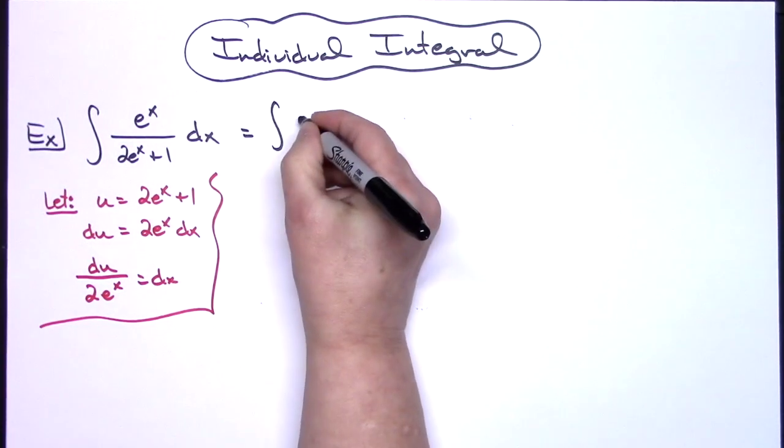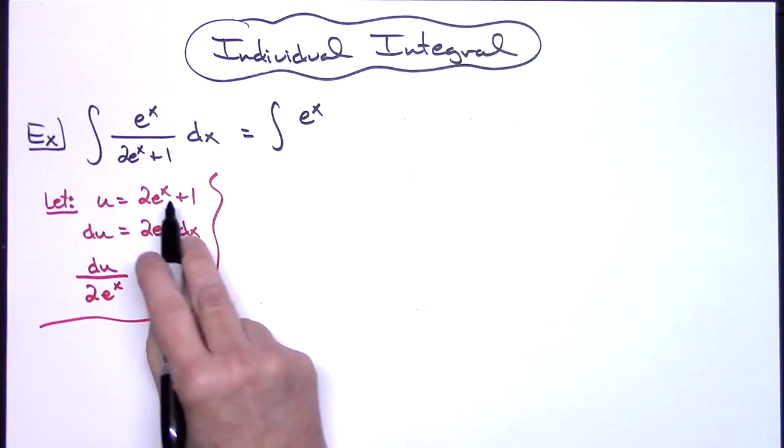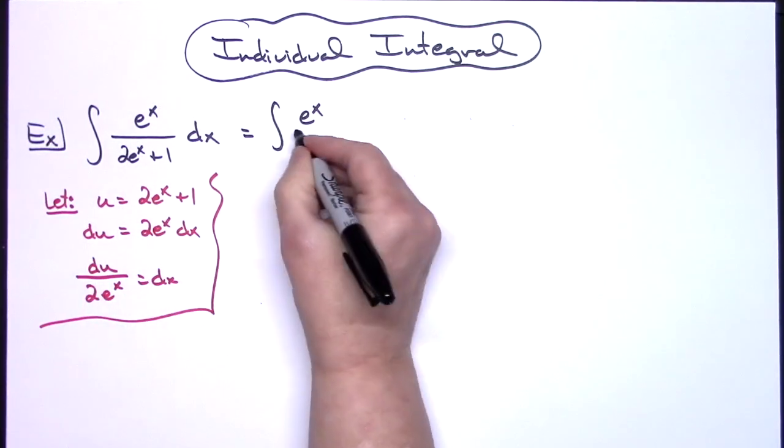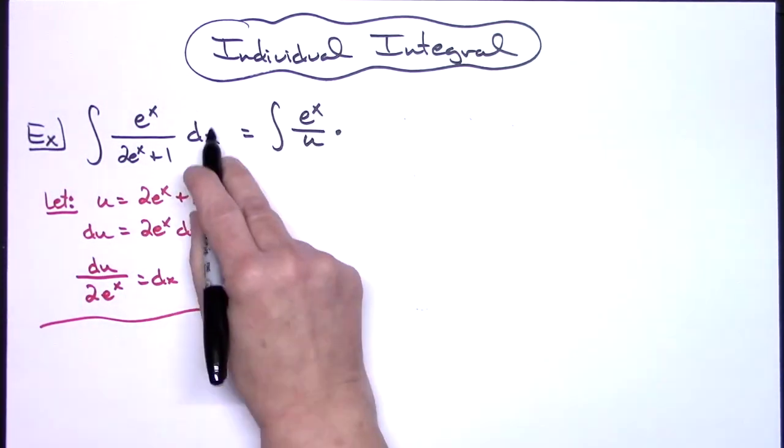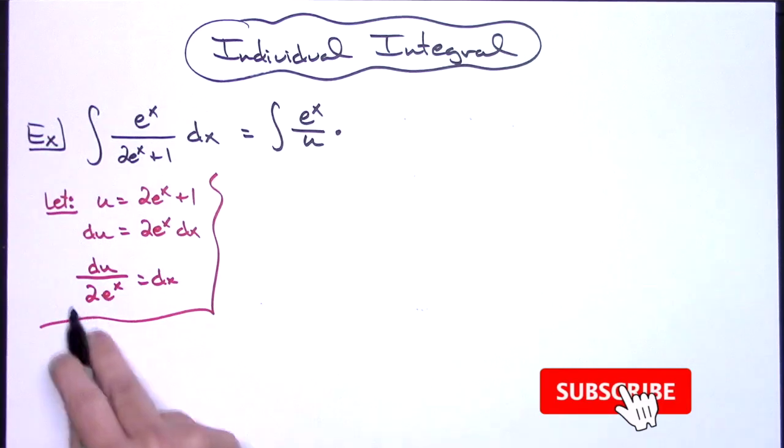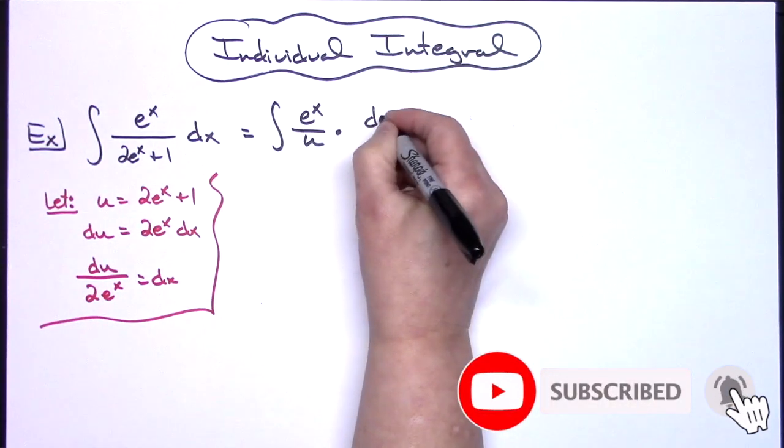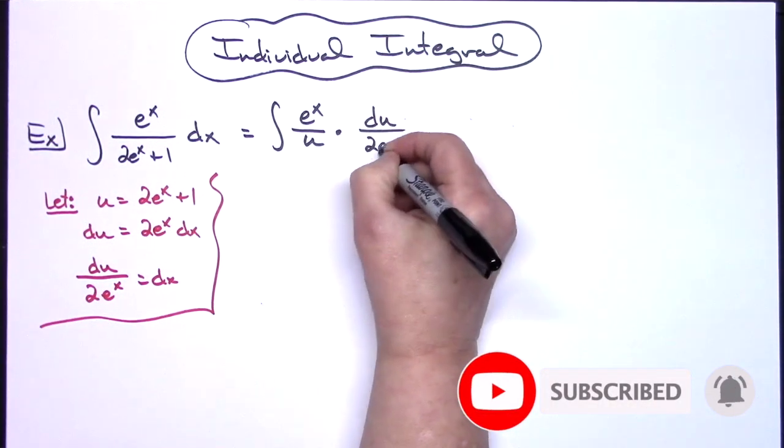In the numerator I'm still going to have that e to the x. My denominator can be replaced with a u and then this dx can be replaced with what it equals, a du over a 2e to the x.